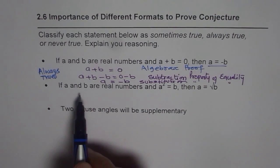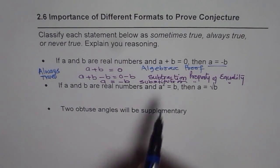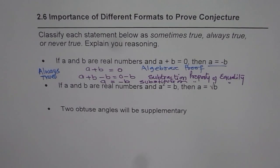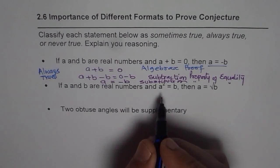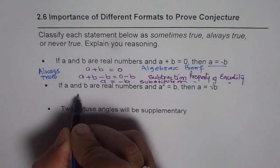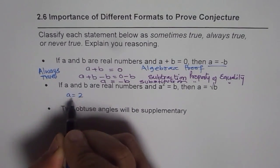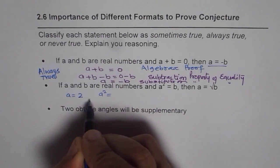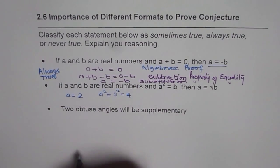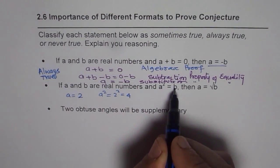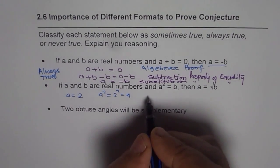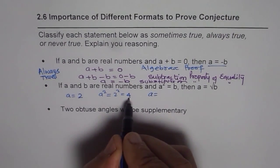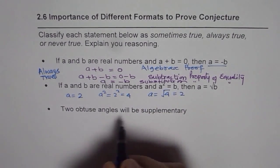The next statement is: if A and B are real numbers and A squared equals B, then A equals the square root of B. It seems to be correct, but let us investigate it. If A equals 2, then A squared is 4. The equation A squared equals B means B equals 4, and the square root of B is 2. That is correct.